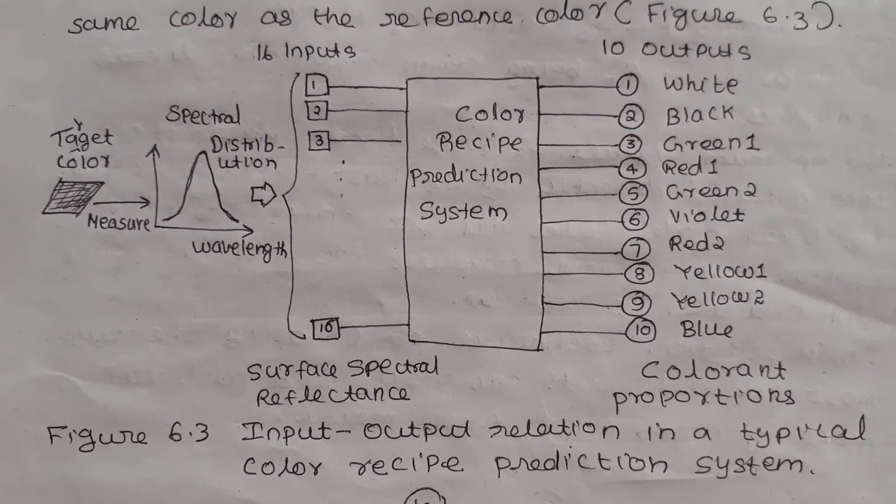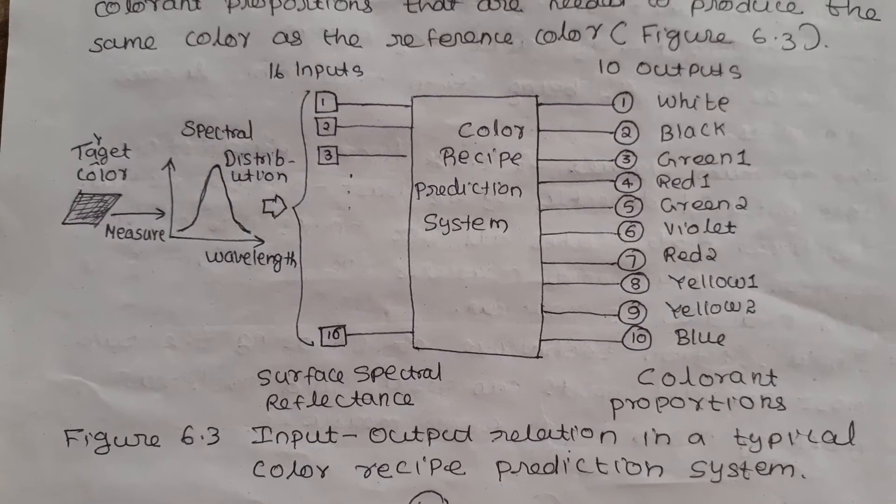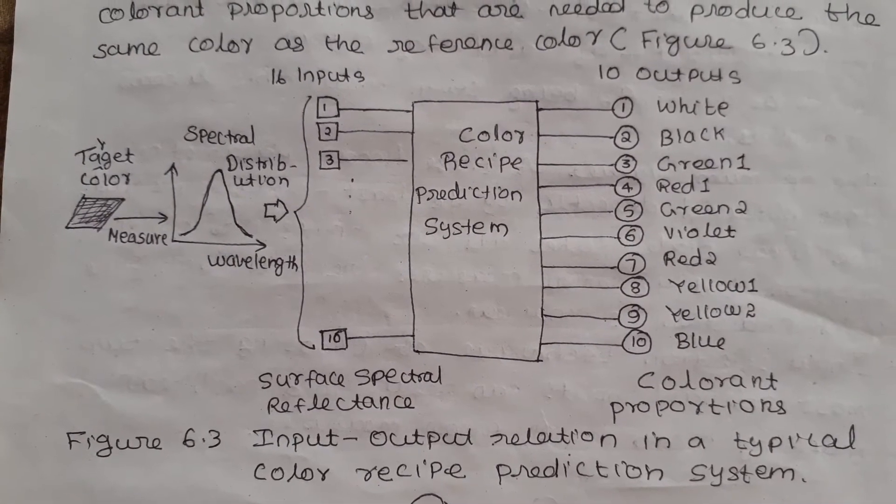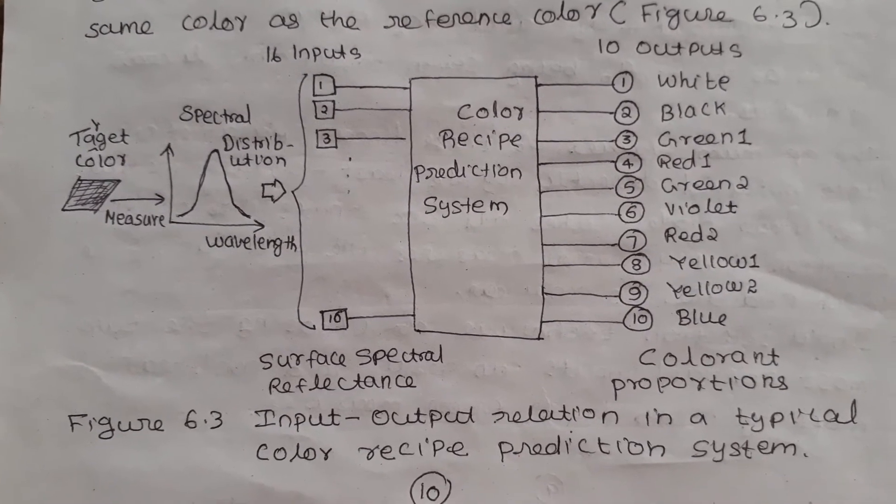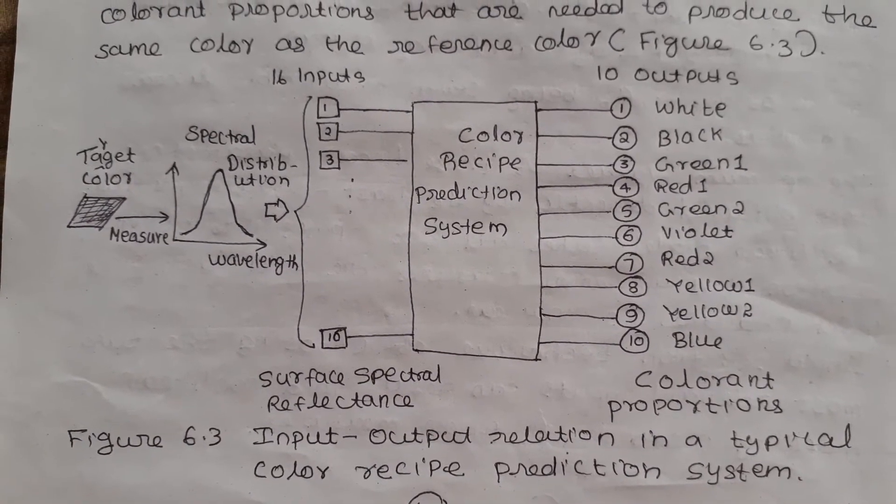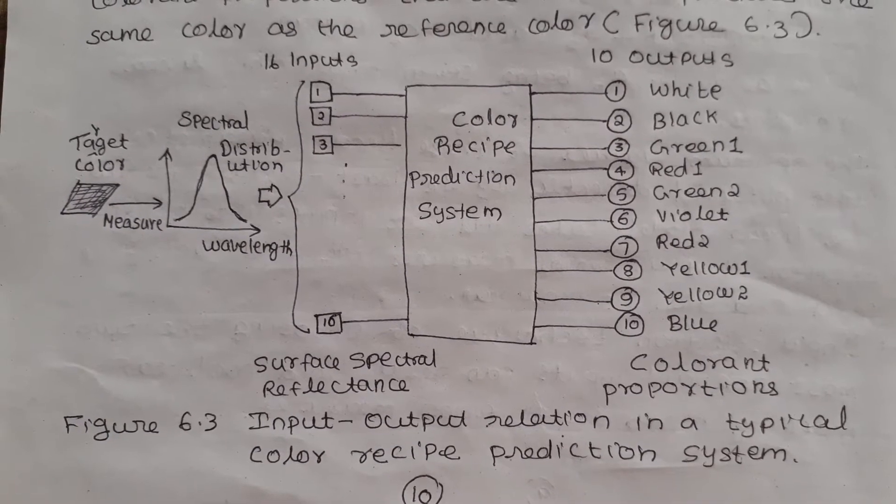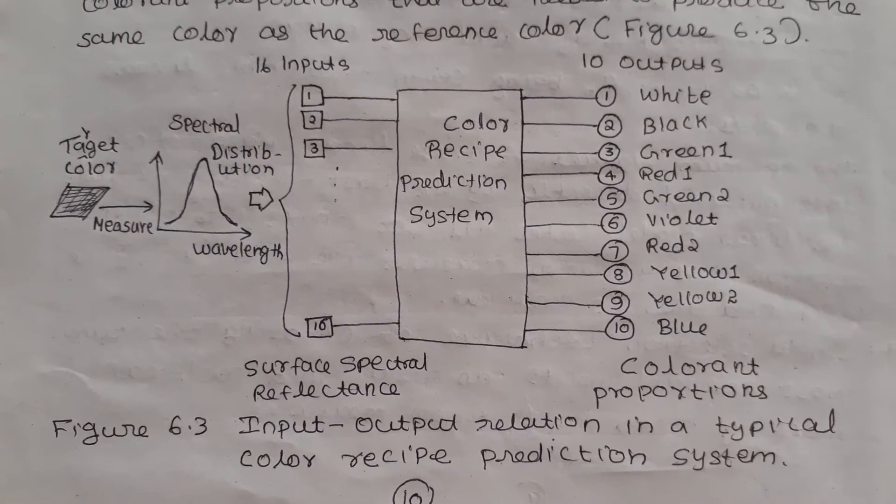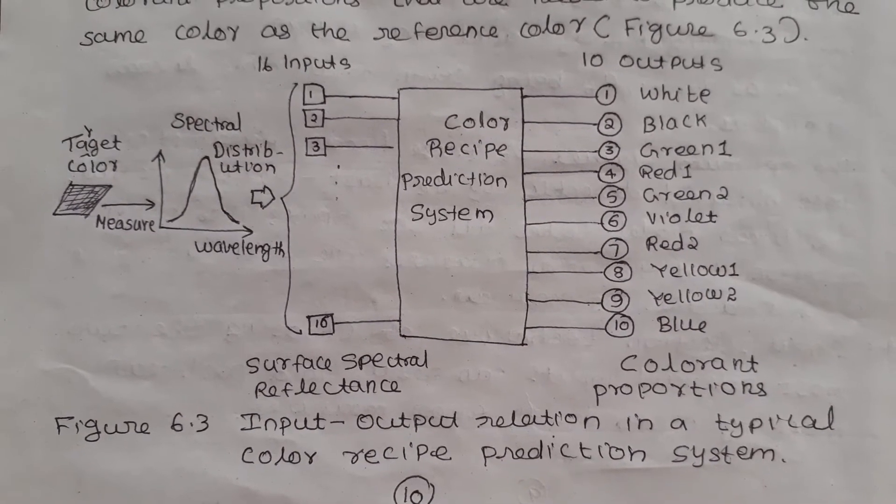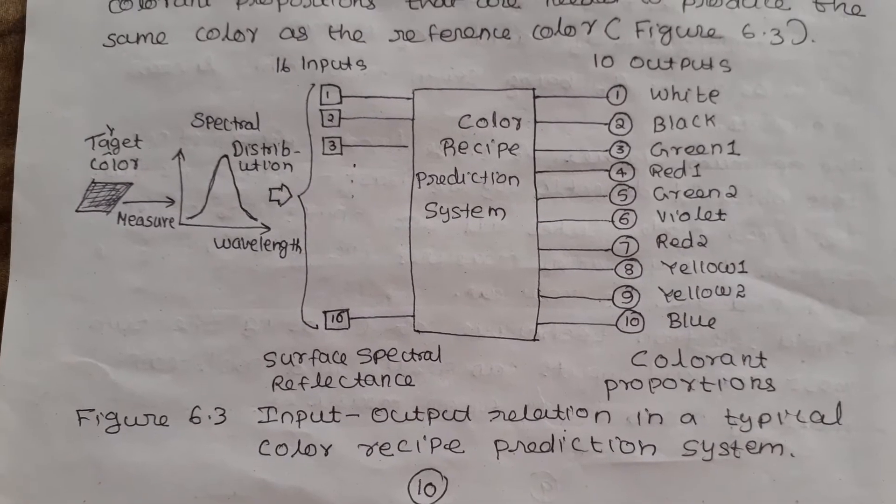Next is canvas modeling for color recipe prediction. How can neurofuzzy models be generalized for application to color recipe prediction? The neurofuzzy approaches are expressed within the framework of canvas - coactive neurofuzzy inference systems. We will see fuzzy partitioning for canvas. In fuzzy modeling it is important to determine a reasonable number of membership functions to maintain appropriate linguistic meanings. The color recipe prediction problem has 16 surface spectral reflectance inputs and 10 colorant proportion outputs as depicted in Figure 6.3.